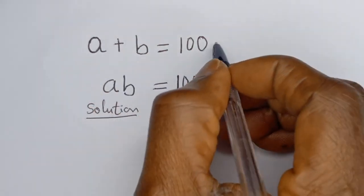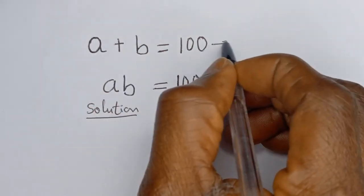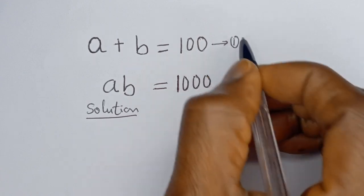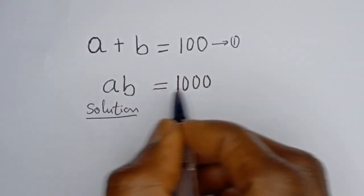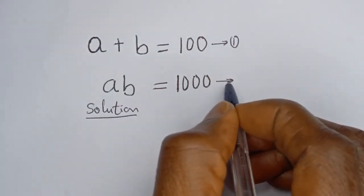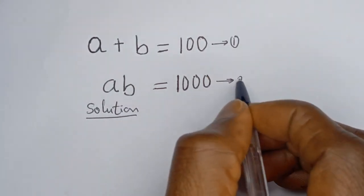A plus B is equal to 100 — let's call this equation 1. AB is equal to 1,000 — let's call this equation 2.